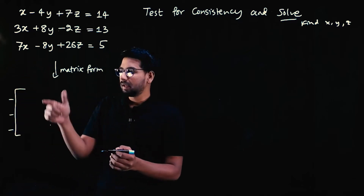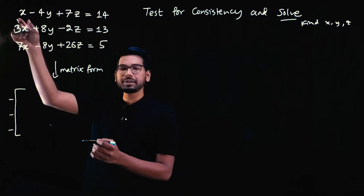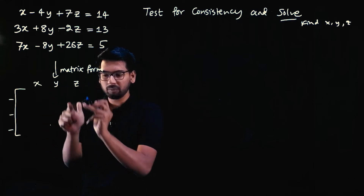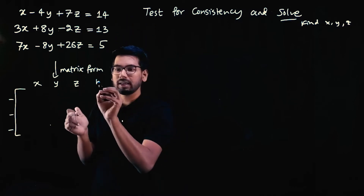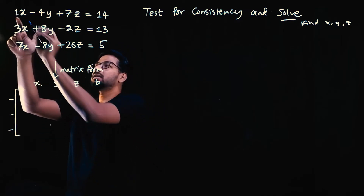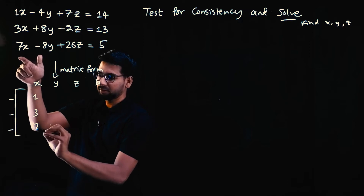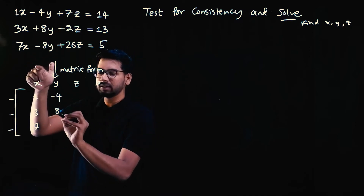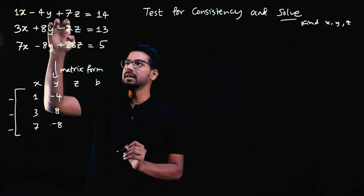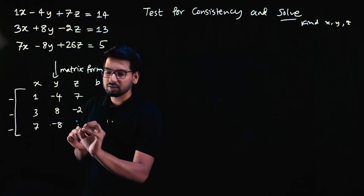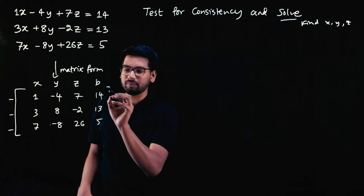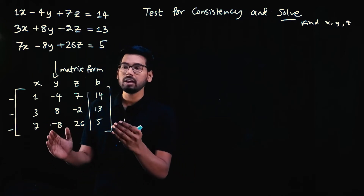Each equation becomes a row in the matrix. We have 3 equations, so we have 3 rows. The matrix columns are: first column — coefficients of x; second column — coefficients of y; third column — coefficients of z. Then the RHS values. The elements are: 1, 3, 7 for x-coefficients; minus 4, 8, minus 8 for y-coefficients (take with sign); 7, minus 2, 26 for z-coefficients; and the RHS column is 14, 13, and 5.